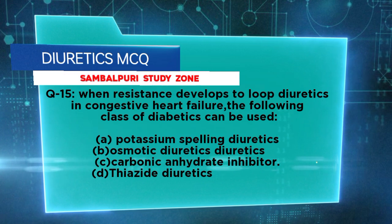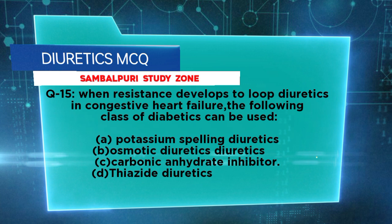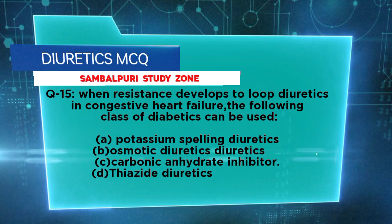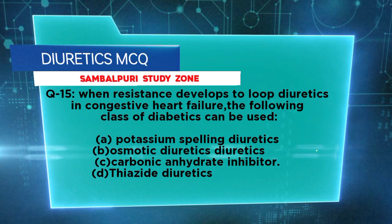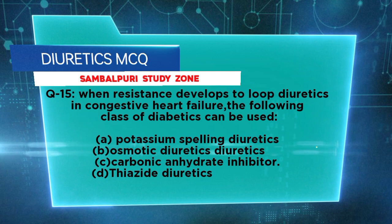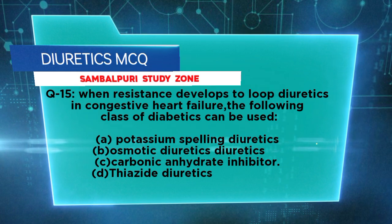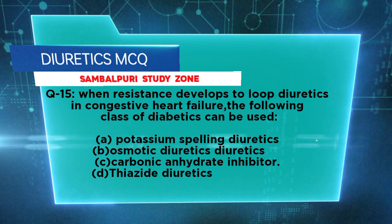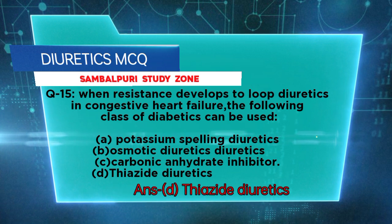When resistance develops to loop diuretics in congestive heart failure, which class of diuretics can be used? Options: potassium-sparing diuretics, osmotic diuretics, carbonic anhydrase inhibitors, thiazide diuretics. The right answer is thiazide diuretics.